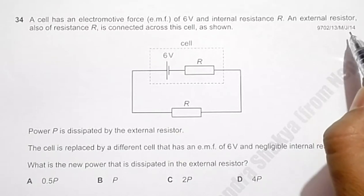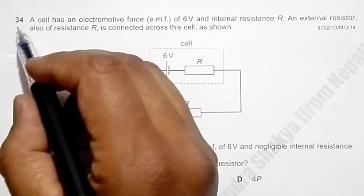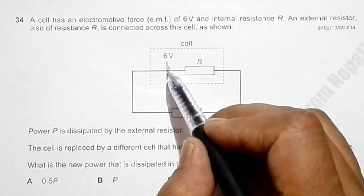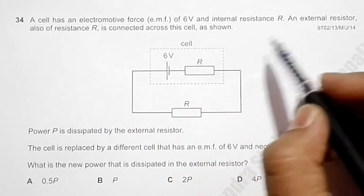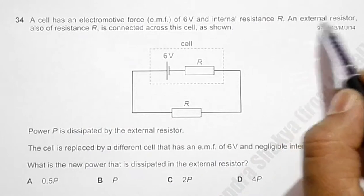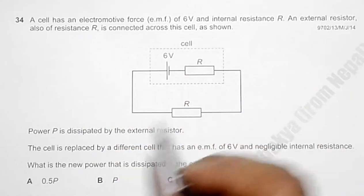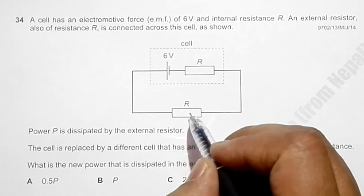This is question 34 from the 2014 major paper 1. It has given a cell with an EMF of 6 volts which has an internal resistance R. We have an external resistance also R connected across the cell, and at this time it dissipates power P by this resistor.